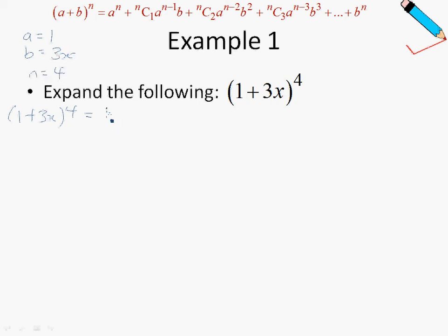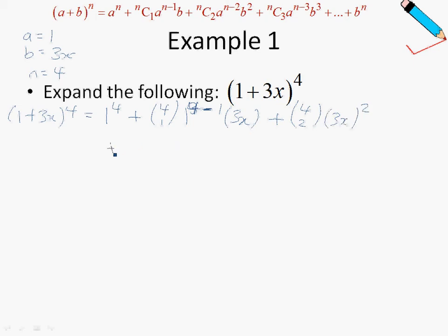So if a is 1, then 1 to the power of 4, and then using the formula, n choose 1 — and remember in the previous video we discussed what n choose 1 is — so in this case n is 4, so 4 choose 1. Since a is 1, it's redundant to keep writing a, because 1 to the power of anything is still 1. So this will be 4, 4 minus 1, and b is just 3x. Carrying on, n choose 2 will be 4 choose 2. There's no point writing the 1, so just leaving that out. This will be 3x squared. A few more terms: n choose 3, and I've got 3x to the power of 3, and then finally 4 choose 4, and 3x to the power of 4.